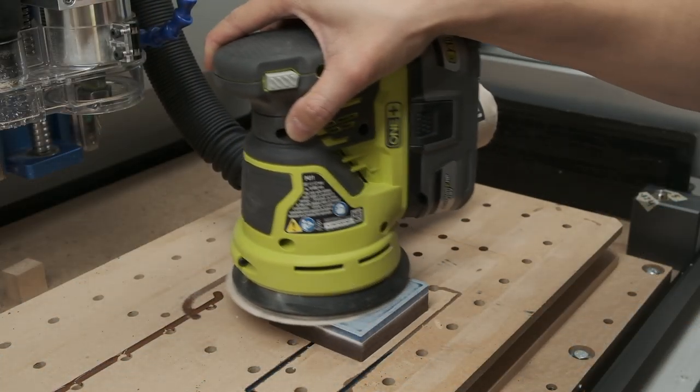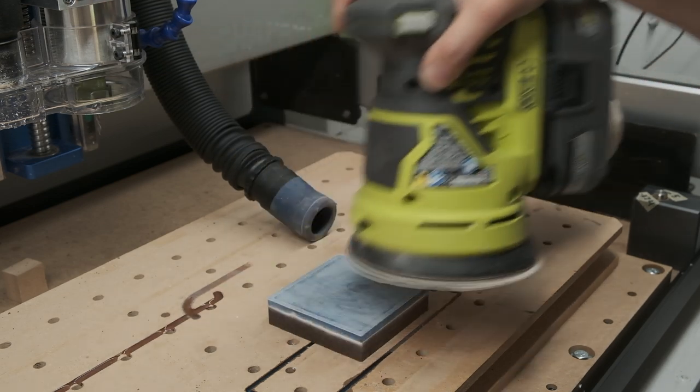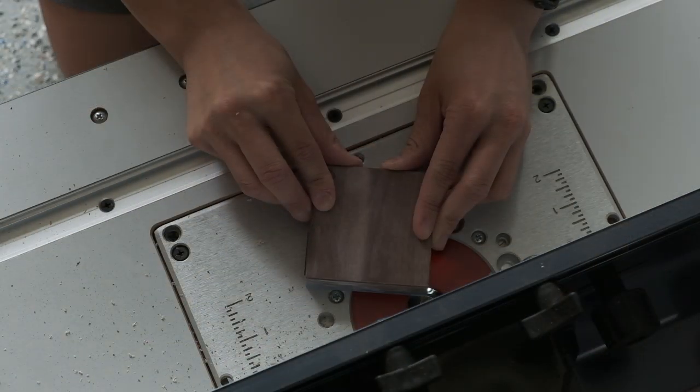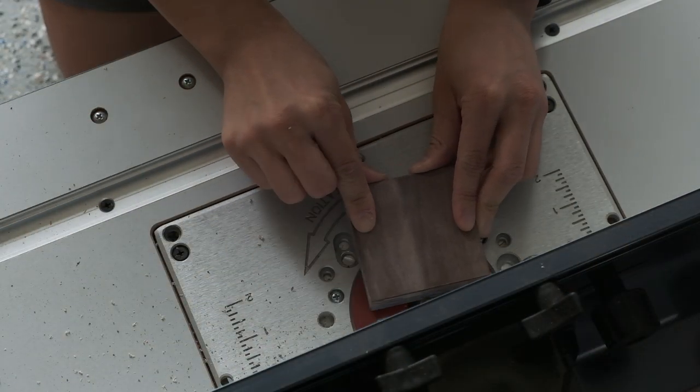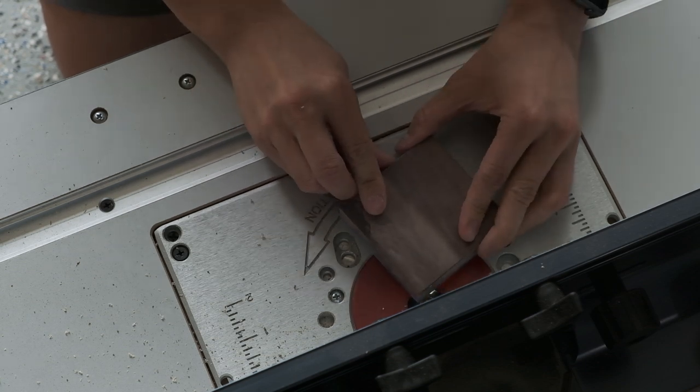I then just had to use a random orbit sander to take down any remaining high spots. After running the piece through my router table to put a subtle chamfer around the top, I was ready to finish it.